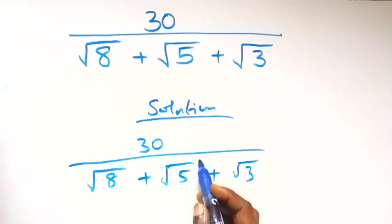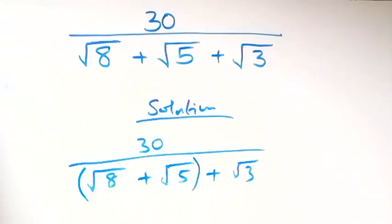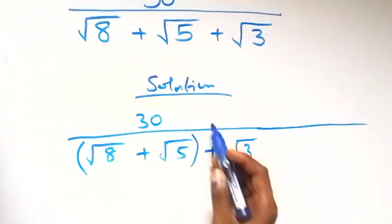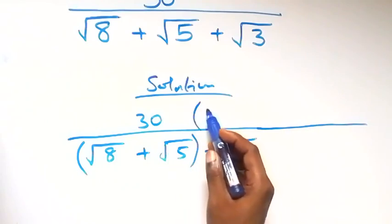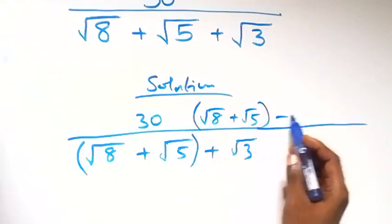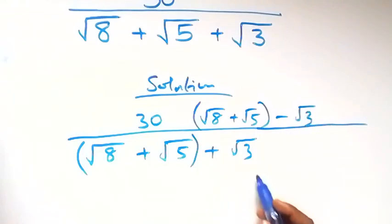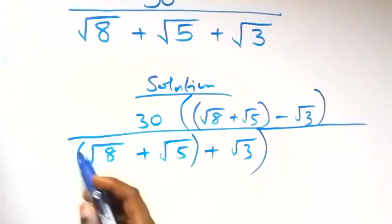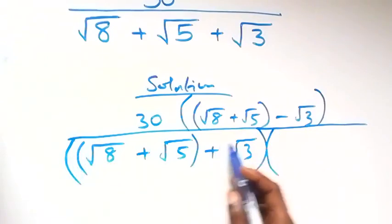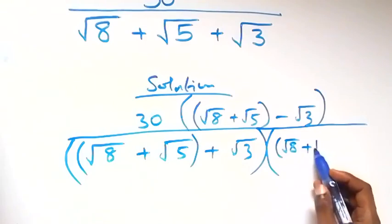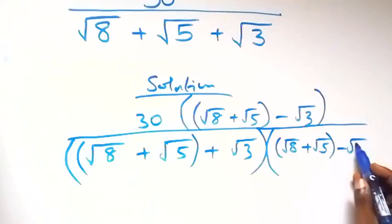From here, let's group root 8 plus root 5 together. The conjugate of the denominator we can use to multiply. The numerator here we have root 8 plus root 5, then minus root 3 — that's the conjugate. This multiplies by 30, and also multiplies by the conjugate of itself, which is root 8 plus root 5 then minus root 3.